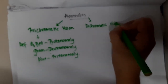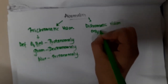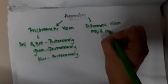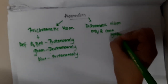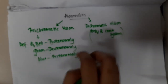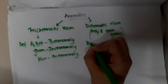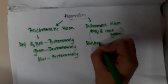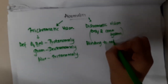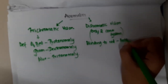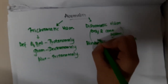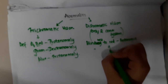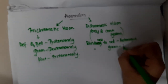If the person has dichromatic vision, the individual has only two cone systems — one cone system is completely absent. Unlike trichromatic anomalies where all three cones are present but deficient, here there is complete blindness to a color. Blindness to red is called protanopia, and blindness to green is called deuteranopia.